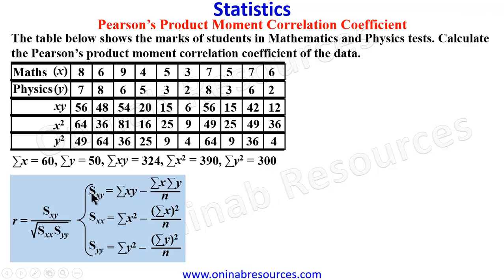We then go ahead to find S_XY, S_XX, and S_YY. For S_XY, Sigma XY is 324 minus Sigma X.